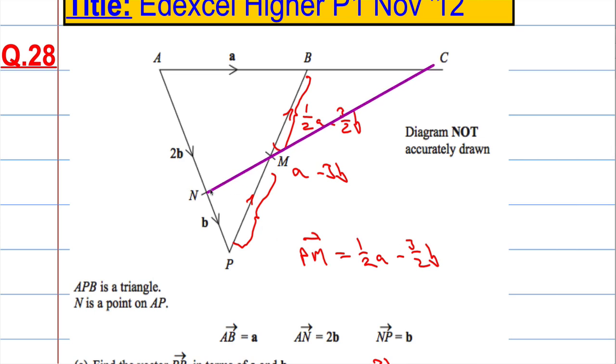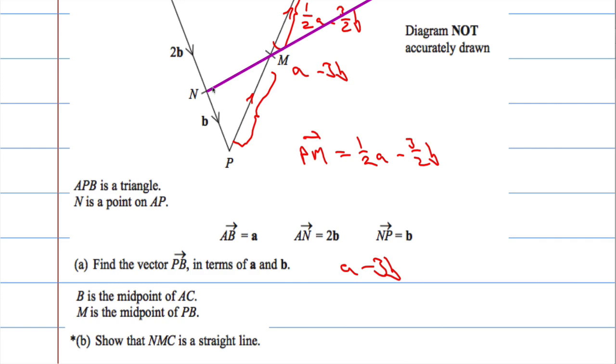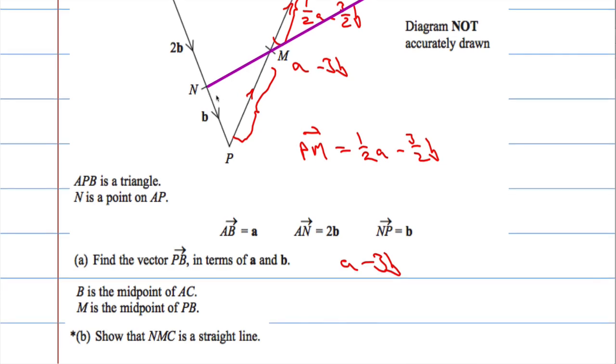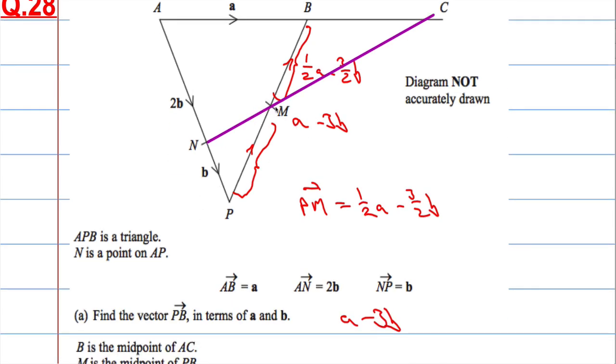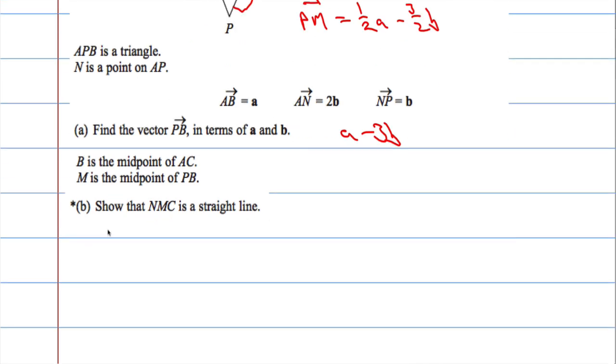The way to do that would be to show that NM and NC are, that NM is some multiple of NC. So if I can multiply NM by some value to get NC, then I know that they're on a straight line, because M is a common point. So let's work out what the vector NM is.